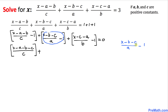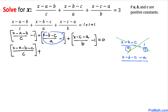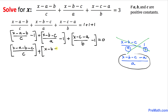Let's repeat the same process for the second bracket. Writing the 1 as 1 over 1 and cross multiplying: 1 times (x minus b minus c) gives x minus b minus c, and negative 1 times a gives negative a, divided by 1 times a which is a. So the second bracket simplifies to (x minus b minus c minus a) divided by a.